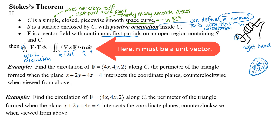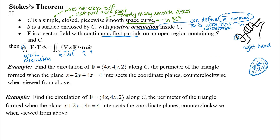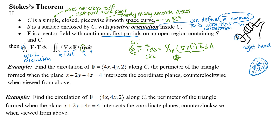This theorem should look very familiar to you. The conclusion looks a lot like the circulation curl form of Green's theorem. Green's theorem really is just a two-dimensional special case of Stokes' theorem. In Green's theorem we used the K vector, but if you think about the geometry — if you have counterclockwise orientation in the XY plane and apply the right-hand rule, the K vector comes straight out toward you, following the same orientation as our n-vector in Stokes' theorem. So you can think of Stokes' theorem as a generalization of Green's theorem to more dimensions.